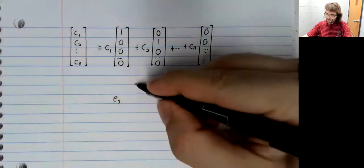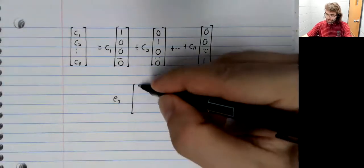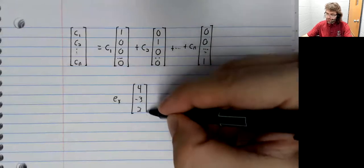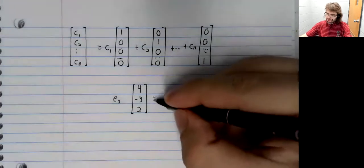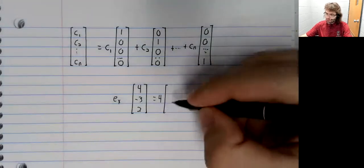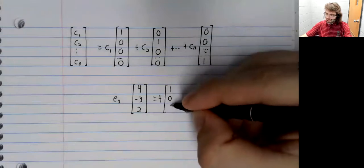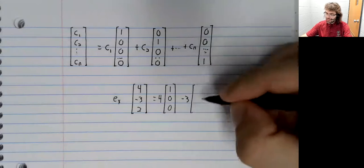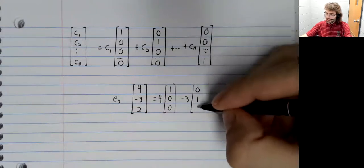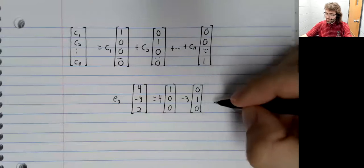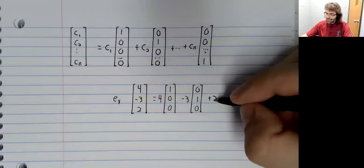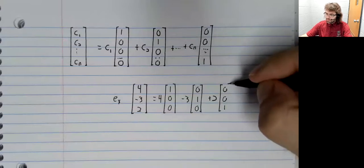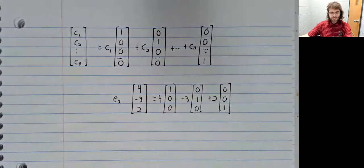So for example, the vector four, negative three, two, just picking a vector at random, is four times E one minus three times E two plus two times E three.